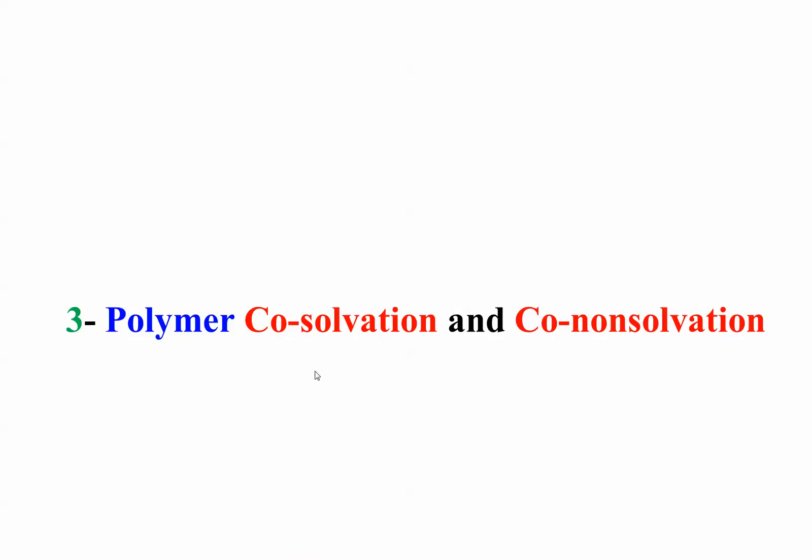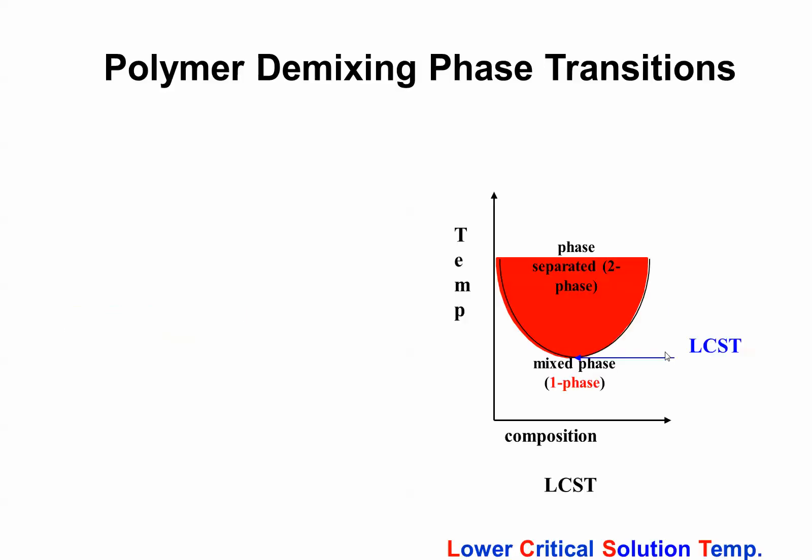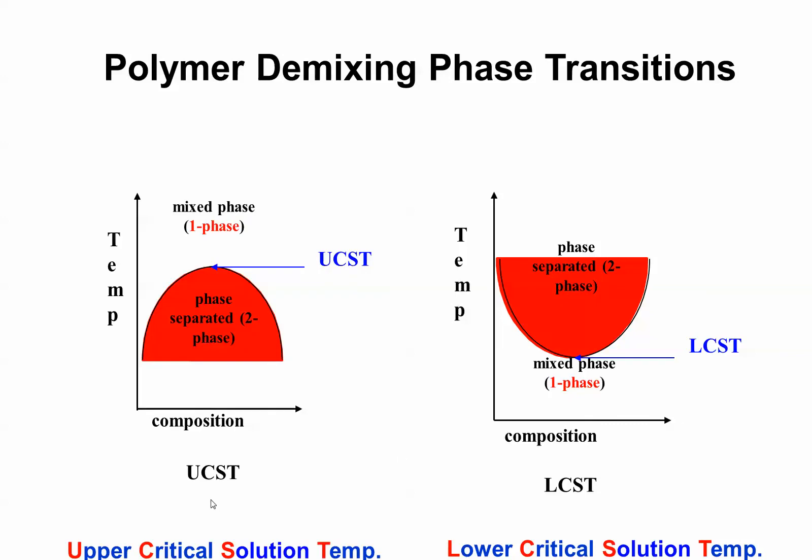The third project is polymer co-solvation and co-non-solvation. What do I mean? If you have a polymer, you use mixed solvents, two solvents instead of one. Does the polymer dissolve better into solvents or worse? General thermodynamics of mixing for polymers. Polymers tend to phase separate either upon heating, it's called lower critical solution temperature, or upon cooling, it's called upper critical solution temperature.